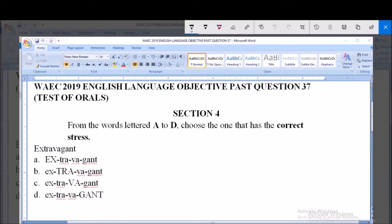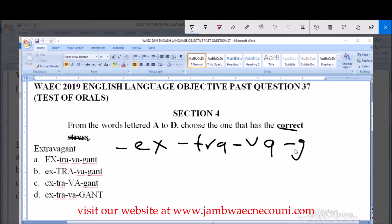Now the instruction is from the words letter A to D, choose the one that has the correct stress. So the word given to us is extravagant, and extravagant of course has four syllables.